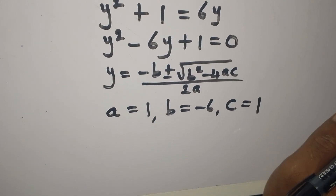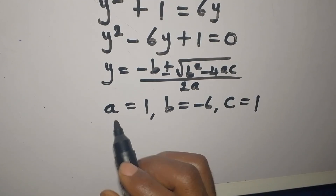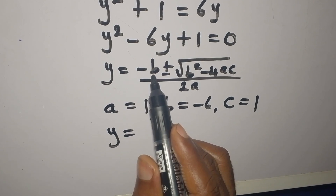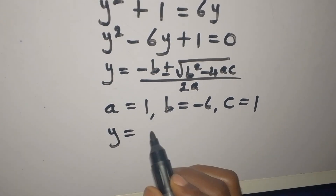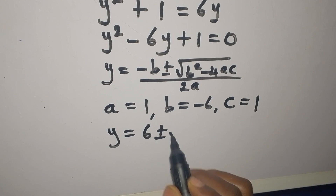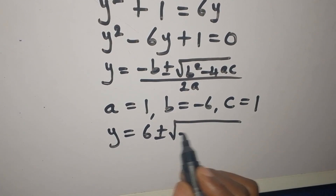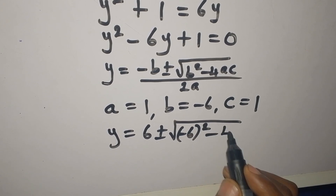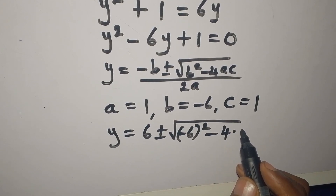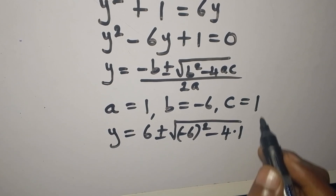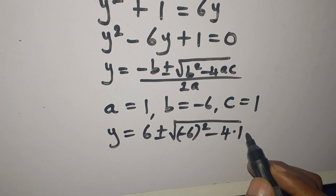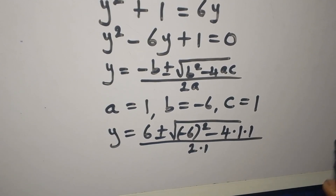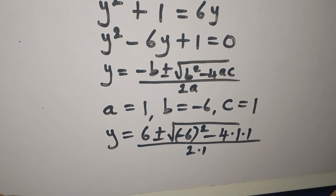Substituting into the formula: Y equals negative (negative 6), which gives positive 6, plus or minus the square root of (negative 6) squared minus 4 times 1 times 1, all divided by 2 times 1.